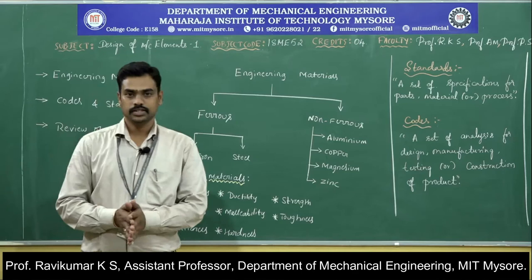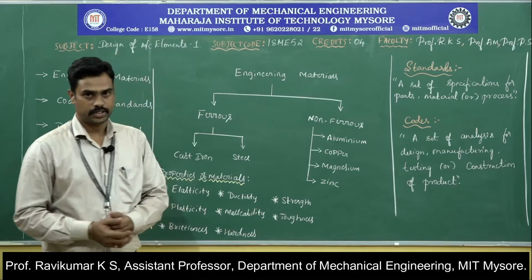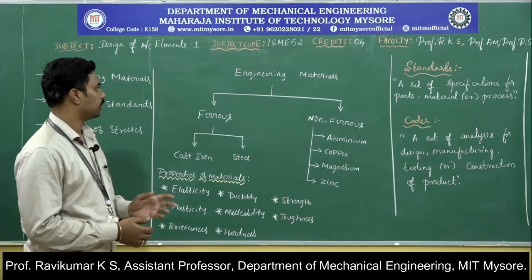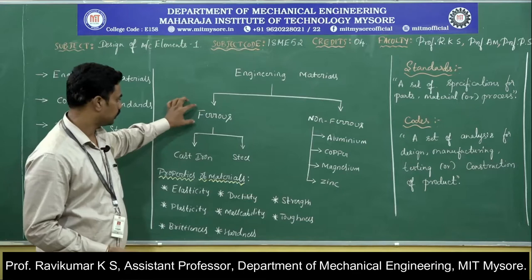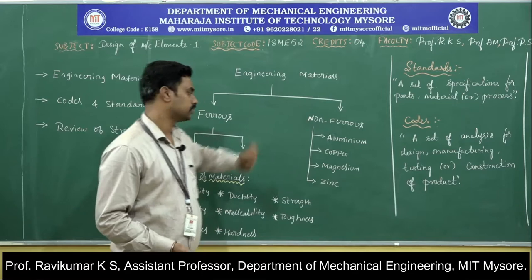Engineering materials are defined as solid substances which are being manufactured for various applications. Engineering materials are classified according to their iron content. Materials which contain iron are termed as ferrous, and those which do not contain iron are termed as non-ferrous.